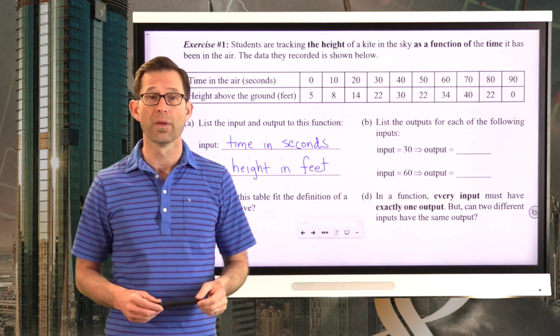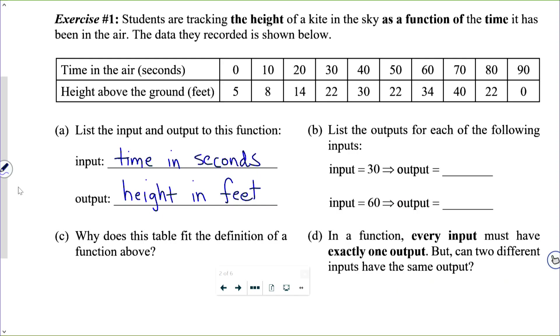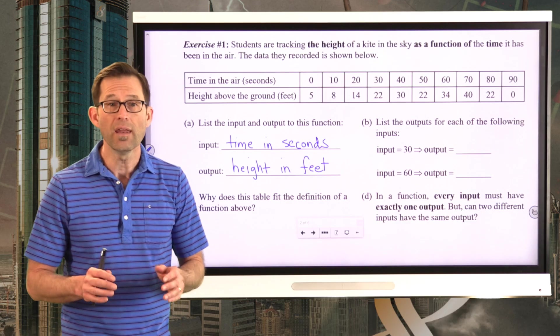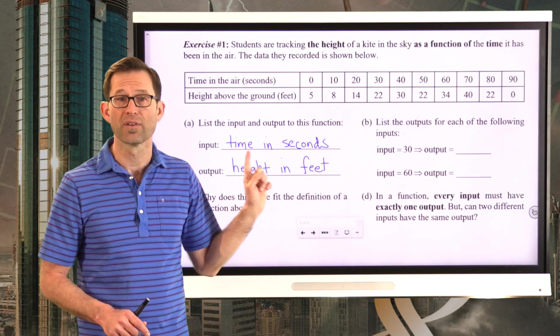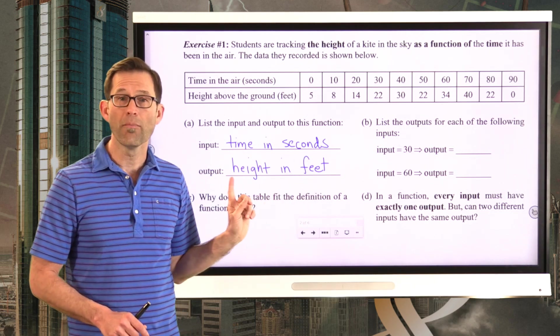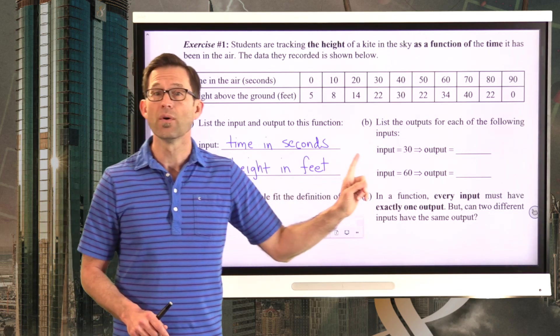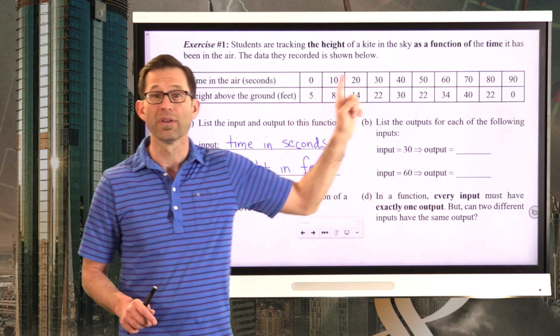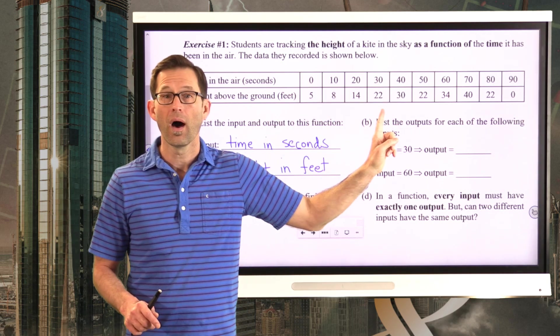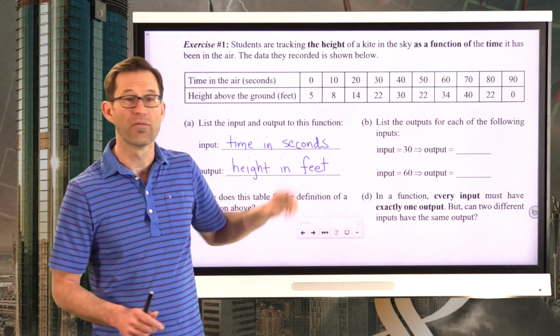So let's take a look at that in letter B. List the outputs for each of the following inputs. Now again, the input to the function is how long the ball has been in the air, the time it's been in the air, and the output is the height in feet. So if the input is 30, literally what that means is, well, at 30 seconds, where's the ball? The ball is 22 feet above the ground.